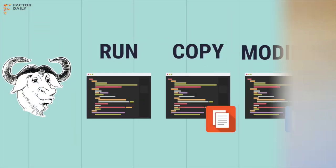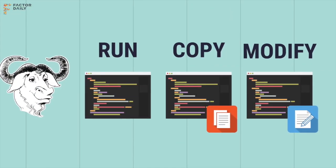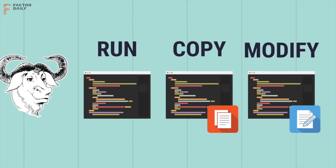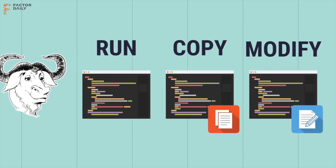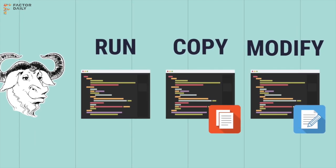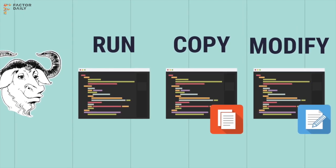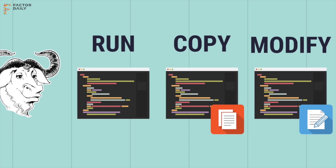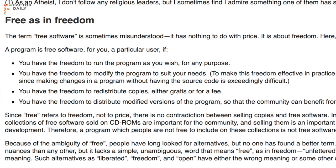There are four essential freedoms which make the definition of free software. Freedom 0 is the freedom to run the program as you wish. Freedom 1 is the freedom to study the source code and change it so the program does your computing as you wish.